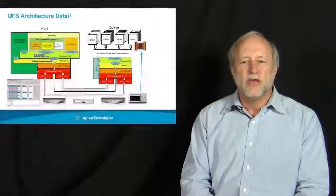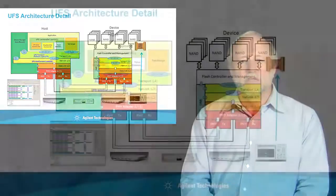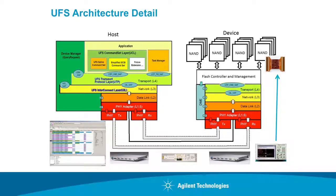If we go into the UFS architecture at the next level of detail, here you can see a complete UFS system consisting of a host and a device with the internal architecture exposed. On the left side is a typical structure for a UFS host — an application processor talking to embedded mass storage, such as a phone, tablet, or camera that has an operating system and pre-loaded apps. The lower levels of the protocol and architecture are really very much the same on both the host and the device side.